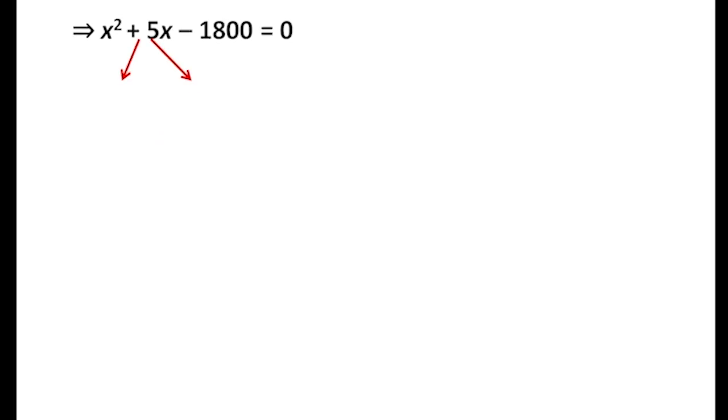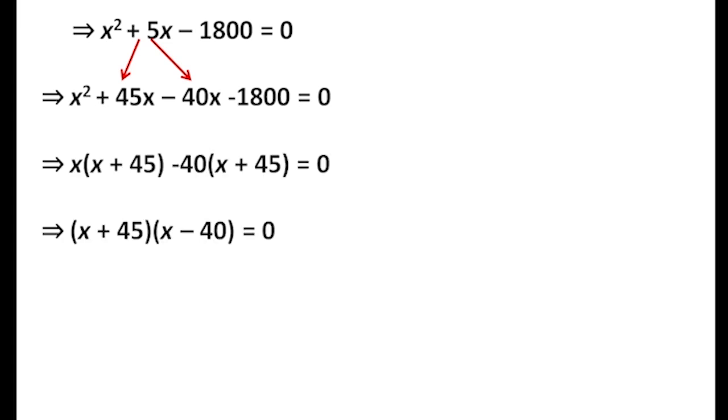Using the middle term splitting method, we get x squared plus 45x minus 40x minus 1800 equals 0. Factoring gives us x(x + 45) minus 40(x + 45) equals 0, so (x + 45)(x - 40) equals 0. Therefore, x equals 40 or minus 45.